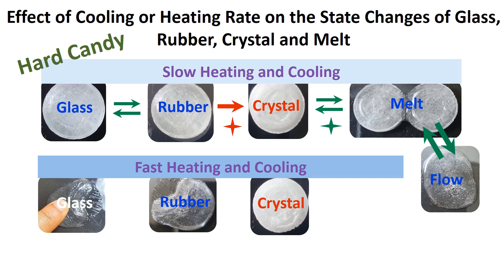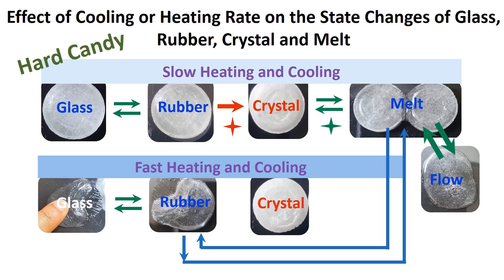The lower layer shows fast heating and fast cooling effects. Glass could be transformed to rubbery with fast heating, and then cooled to melt and then flow. Interestingly, we can observe that rubbery state transforms to melting state, bypassing the crystalline state. Reverse fast cooling could transform from flow to melt, then rubbery, and then glassy.